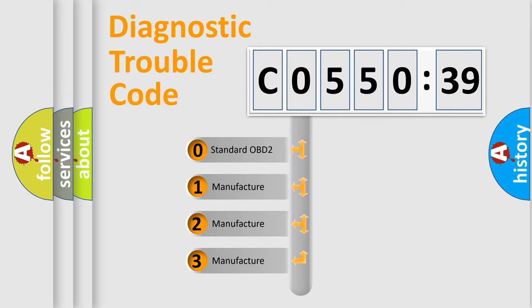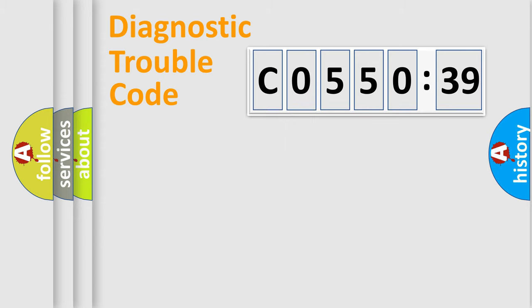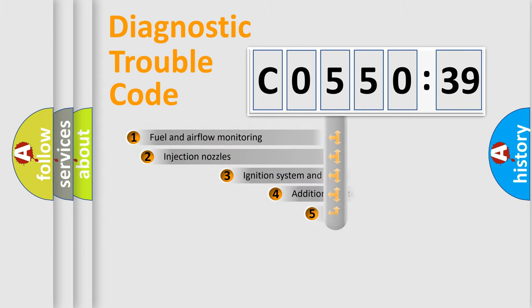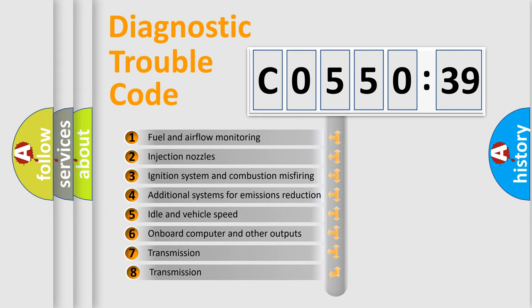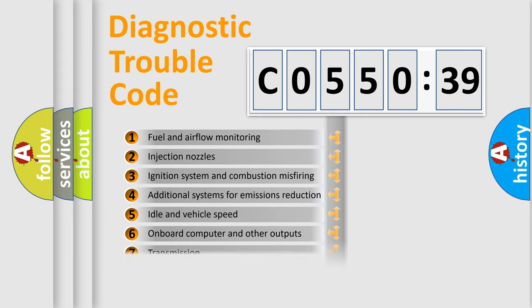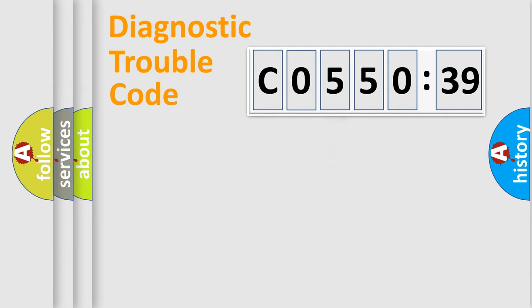If the second character is expressed as zero, it is a standardized error. In the case of numbers 1, 2, or 3, it is a manufacturer-specific error. The third character specifies a subset of errors. The distribution shown is valid only for the standardized DTC code.